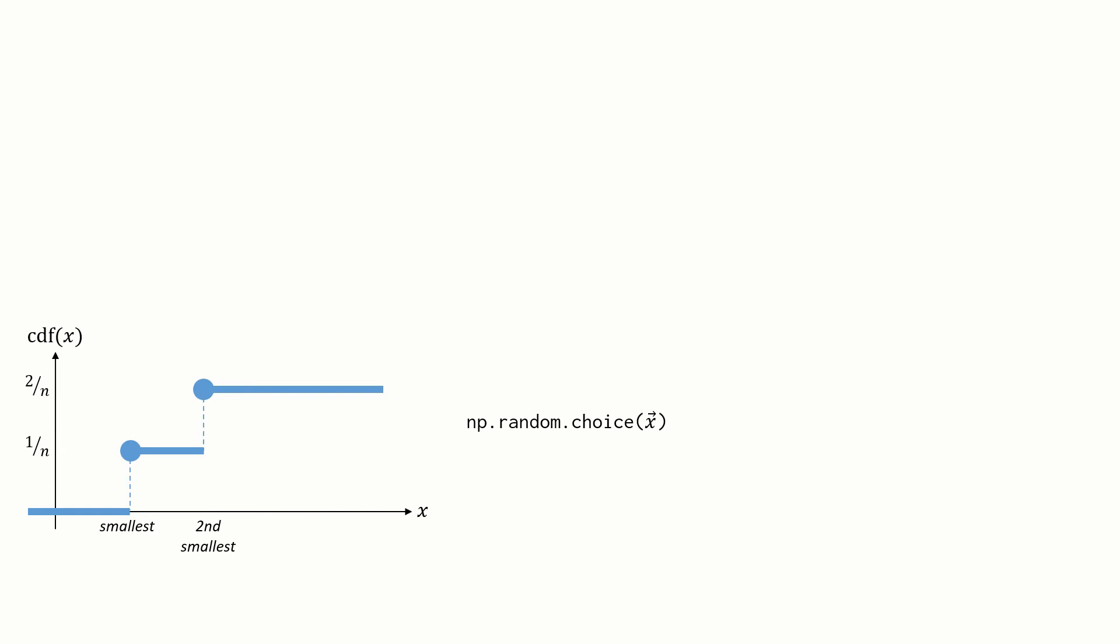Clearly, this generalizes straightforwardly to lists of arbitrary length. Here, if x with an arrow on top is a list of data points, and we pick an item at random from the list, the CDF is just this step function.